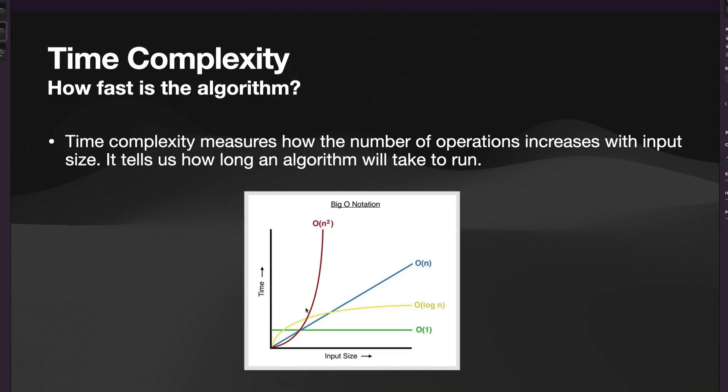And next up, the worst possible performance we could have is quadratic performance here. So you can see that as input size grows, the amount of time it takes the algorithm to complete increases exponentially. And this happens with stuff like nested loops. So if you have a for loop within a for loop, your runtime would be O(n²). If you have a for loop within a for loop within a for loop, it's O(n³), so on and so forth, right?